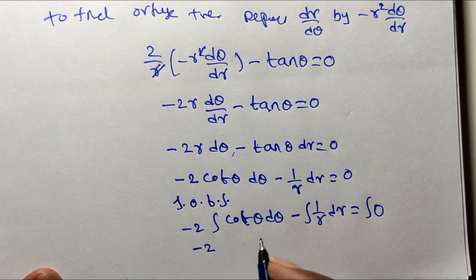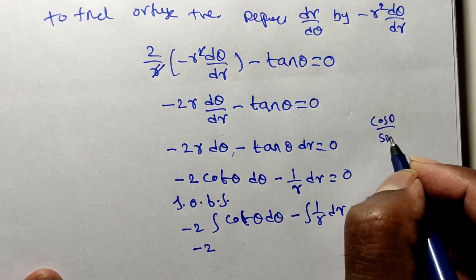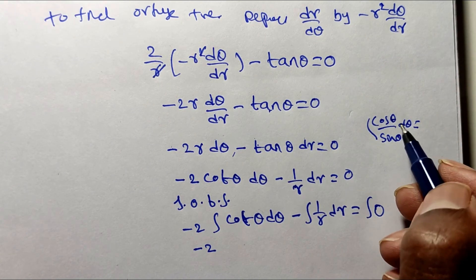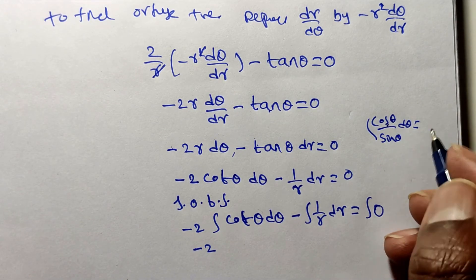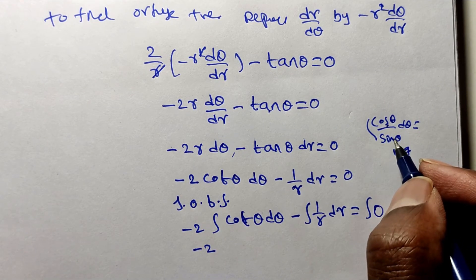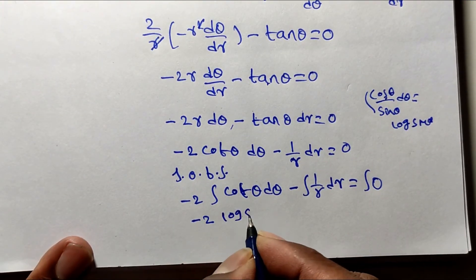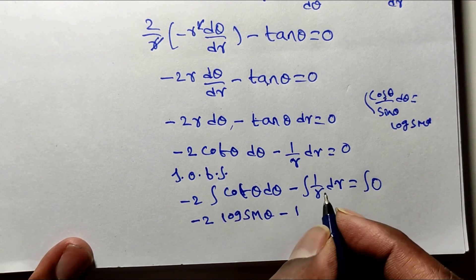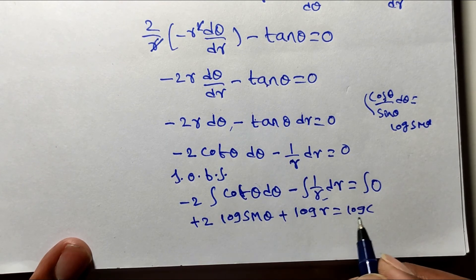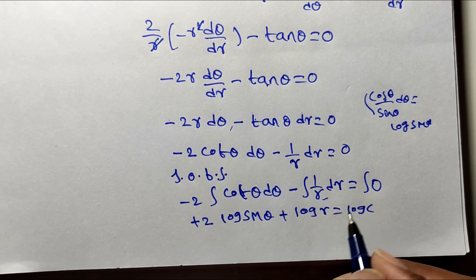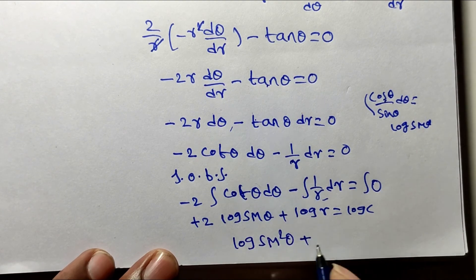For the integral of cot θ: cot θ = cos θ/sin θ. Since the derivative of sin θ (the denominator) is cos θ (the numerator), we use the formula ∫f′(x)/f(x) dx = log|f(x)|. So ∫cot θ dθ = log|sin θ|. Thus: −2 log sin θ − log r = log c. Taking the −2 inside gives log(sin²θ) + log r = log c.